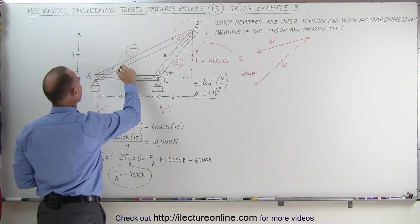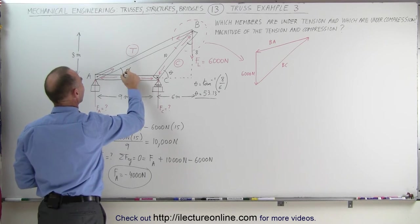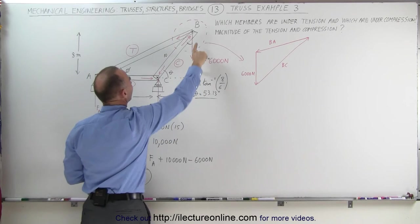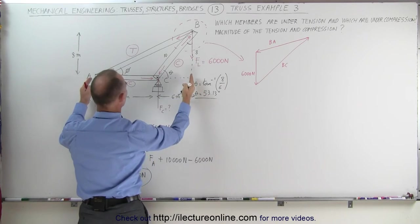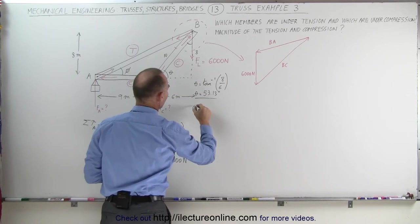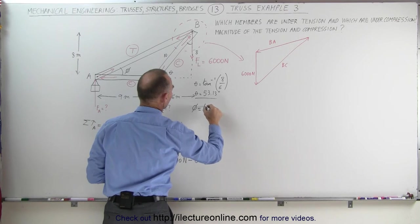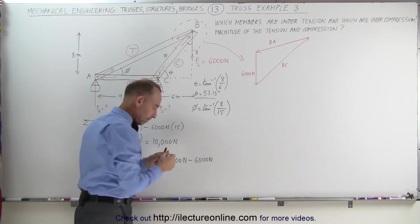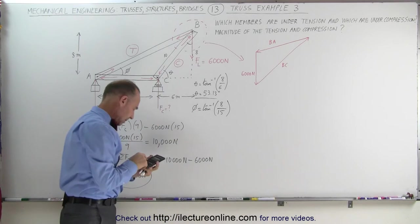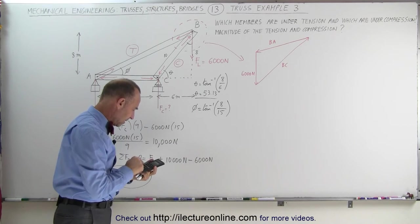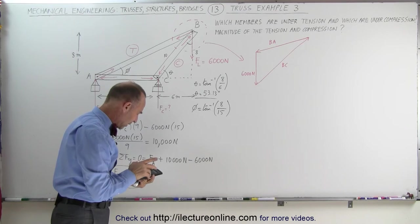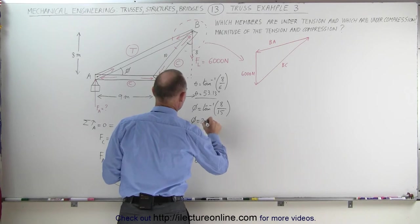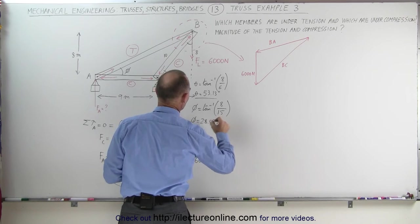Let's try this angle here — let's call it phi. Here we have the big triangle. The opposite side is 8 and the adjacent side is 15. Phi is equal to the arctangent of 8 divided by 15, which gives us 28.07 degrees. Phi is equal to 28.07 degrees.